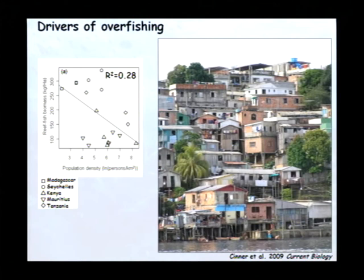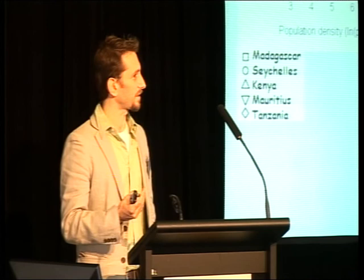We also found that the structural complexity of the reef had a significant relationship. We can see two examples here, both of reefs with low coral cover, but the one on top has got high structural complexity, and on the bottom it's got low structural complexity, which basically means there's few places for critters to hide.